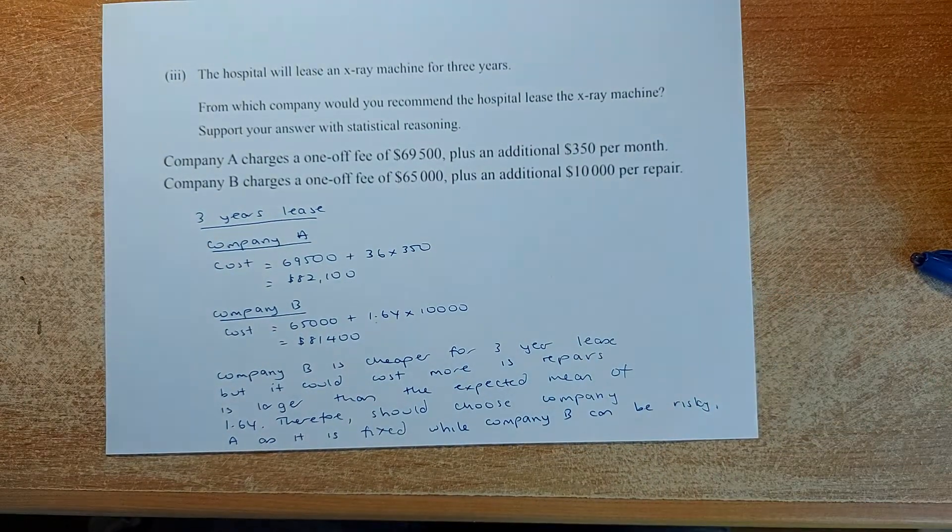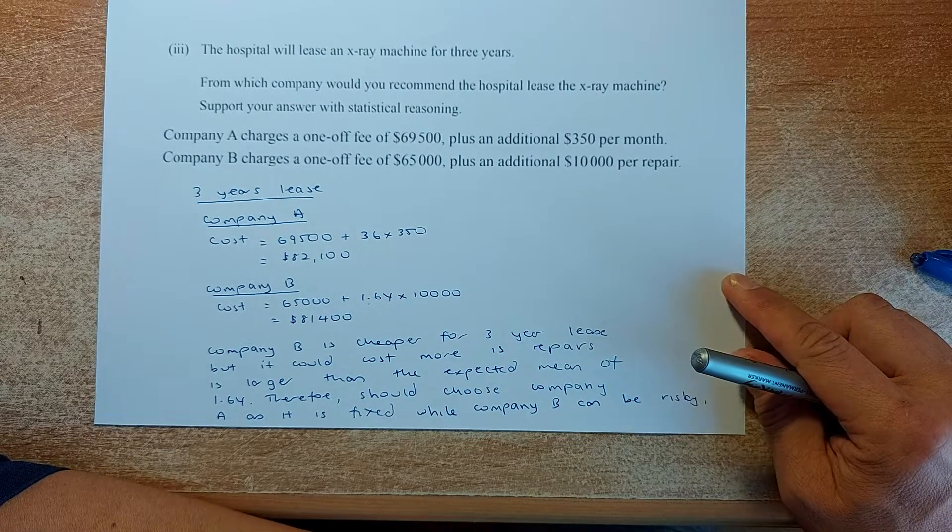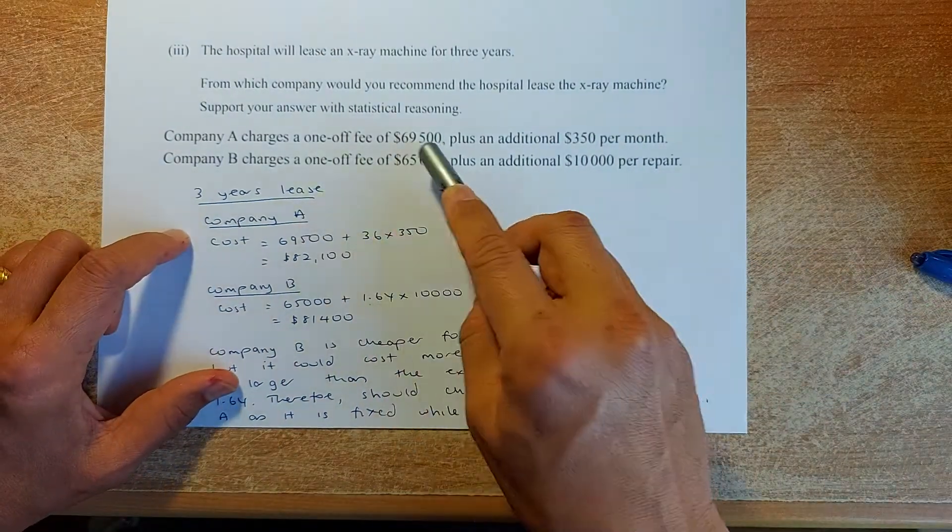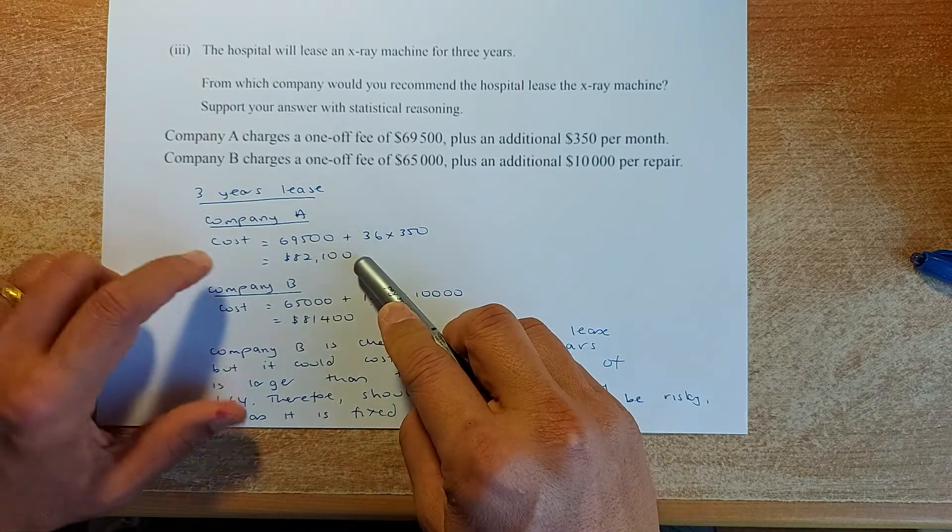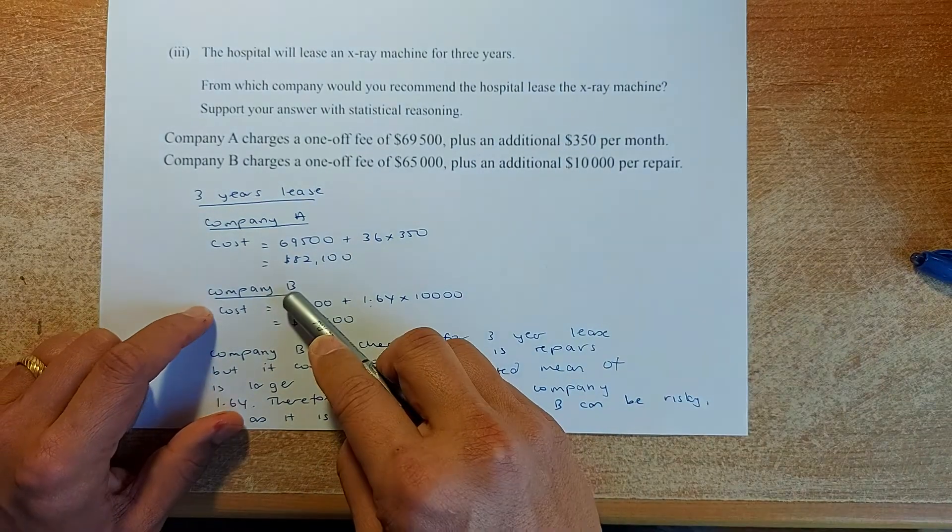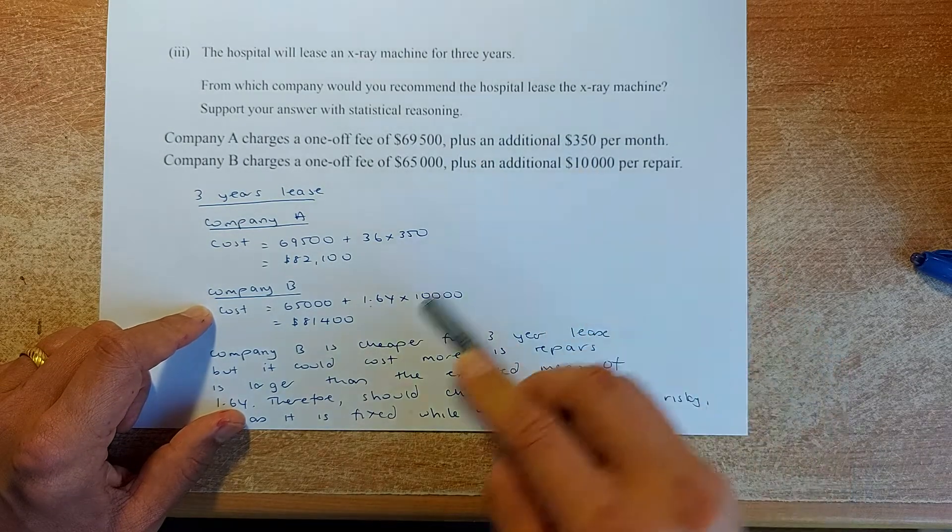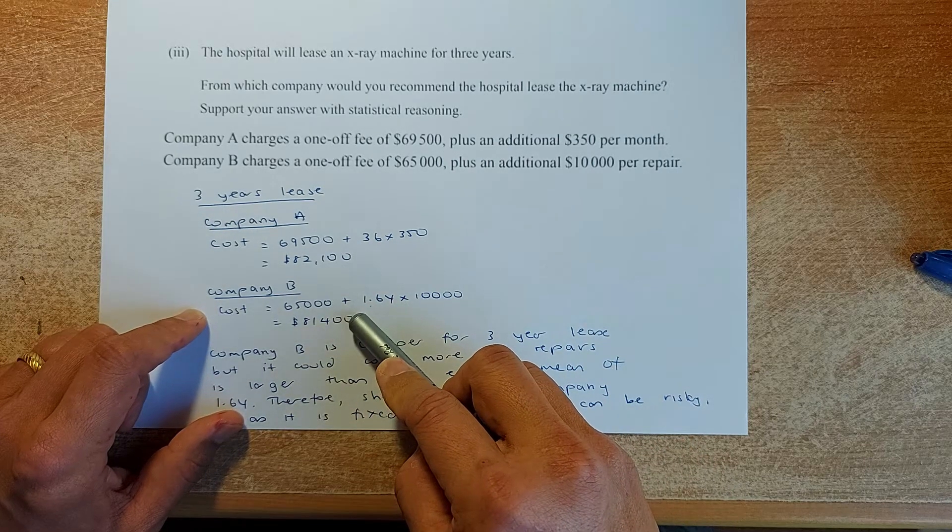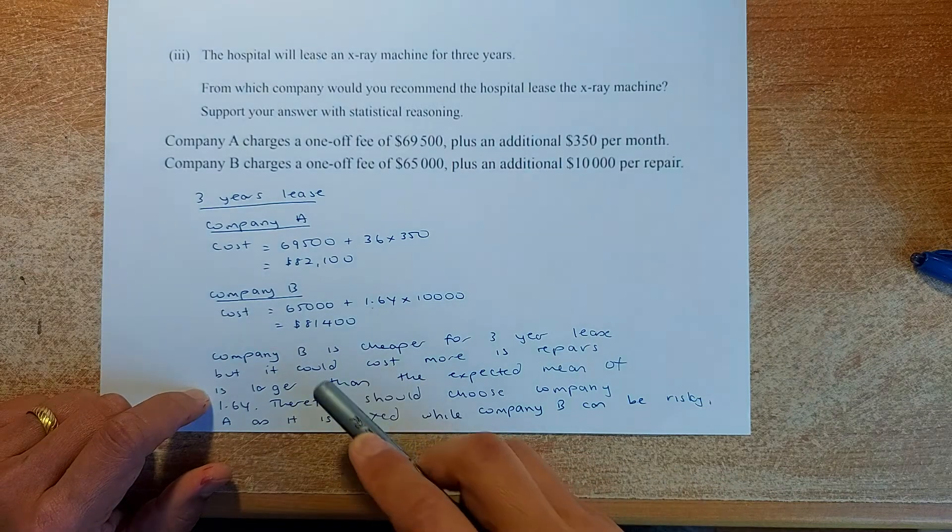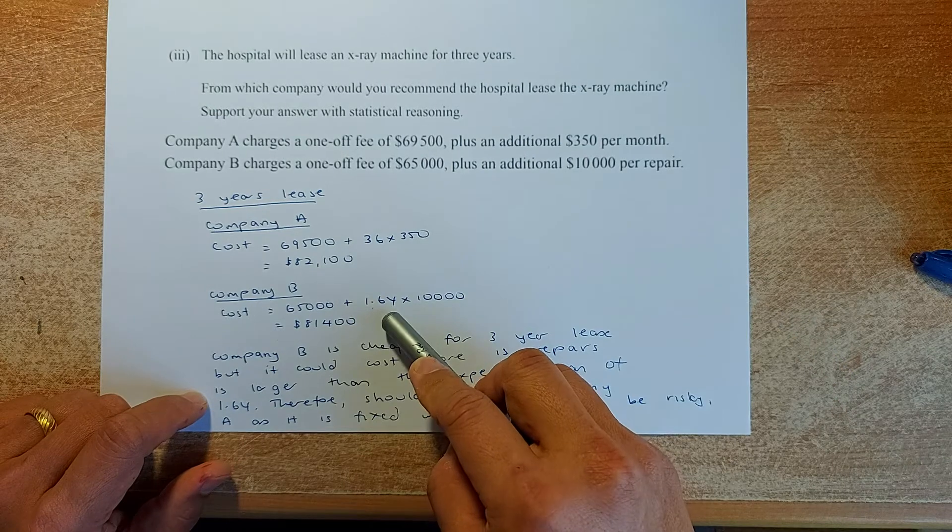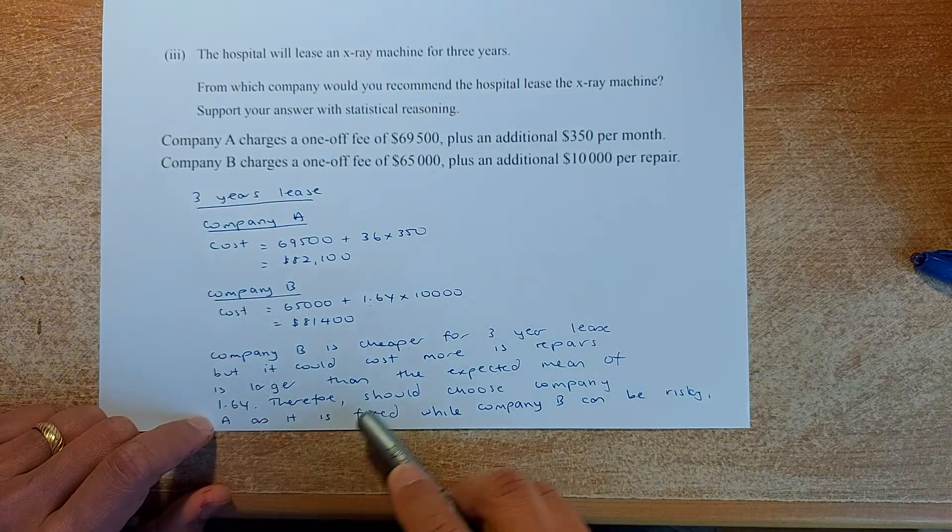Last but not least, the excellence question. The hospital will lease an x-ray machine for three years. For which company would you recommend the hospital lease the x-ray machine? For company A: $69,500 plus $350 per month. In three years there are 36 months, so 36 times 350 totals $82,100. For company B: $65,000 plus the mean number of repairs 1.64 times $10,000 equals $81,400. Company B is cheaper, but it could cost more if repairs exceed 1.64. Therefore, I should choose company A as it is fixed with no worries, while company B can be risky.